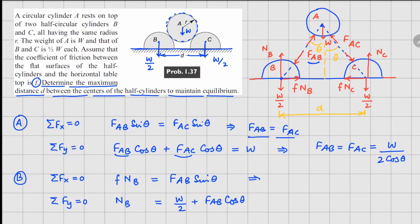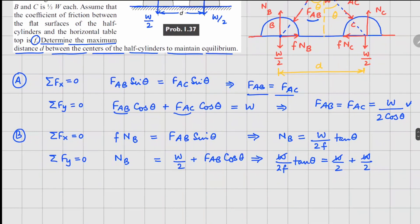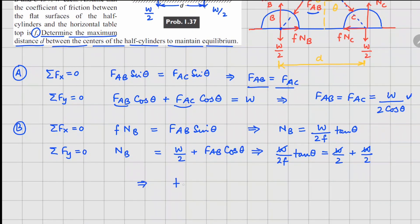So if I substitute the value of FAB here, I can get the value of NB as W divided by 2F tan theta. And going to the second equation, if I substitute W divided by 2F tan theta in place of NB, this is equal to W over 2 plus FAB cos theta from this equation is nothing but W over 2. So now we can cancel W from both sides. And you can see that your tan theta is nothing but 2F.